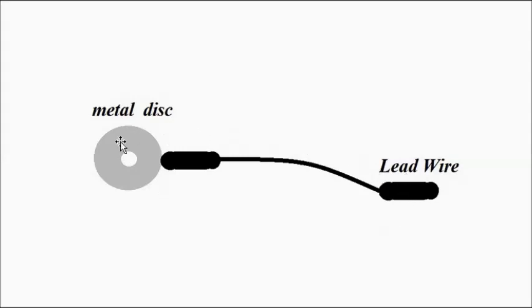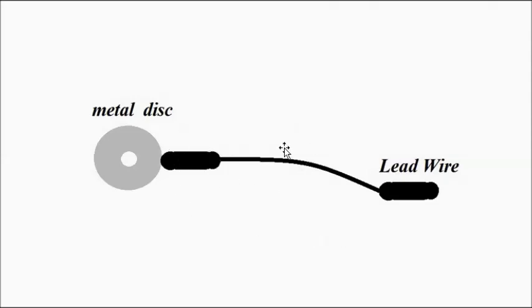The contact impedance of metal disc electrodes is generally of several kilo ohms. The metallic disc is placed on the scalp with the help of suitable electrode paste or jelly so that it does not touch the scalp directly, avoiding the effects of motion artifacts. Lead wires connected to it carry the potential and feed it to the signal conditioning and processing circuitry for amplification, noise removal, linearization, and other purposes.